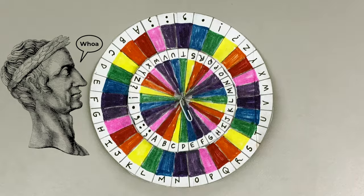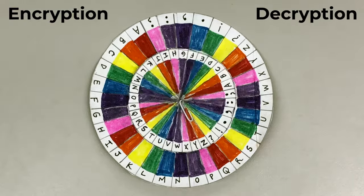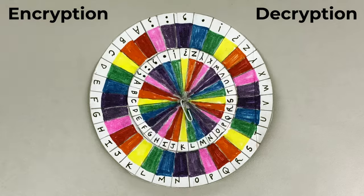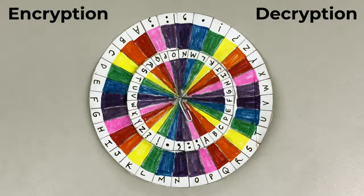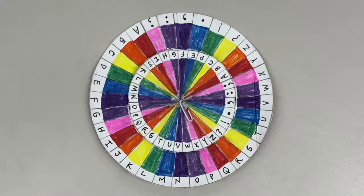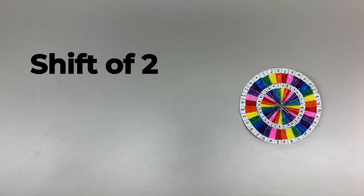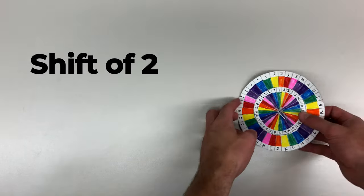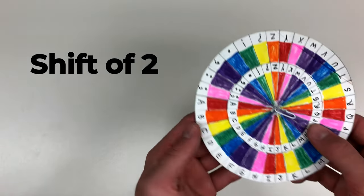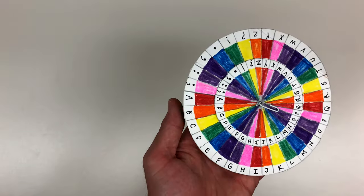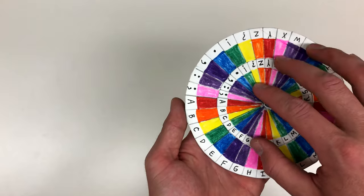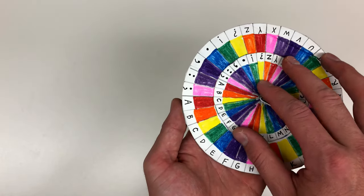Today, encryption and decryption are critical to maintaining the security of our communication and data online. I will be using a shift of two for this video. This means that I will shift the alphabet two letters to the left for my encryption. To create your secret messages, you can use whatever shift you would like.